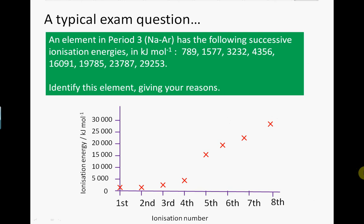One thing with this type of question is don't assume that because you are given eight successive ionization energies, there are only eight electrons in the atom. Don't do that. You may have only been given, as in this case, the first eight ionization energies. That is something to bear in mind.